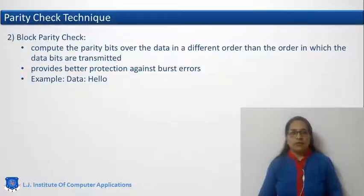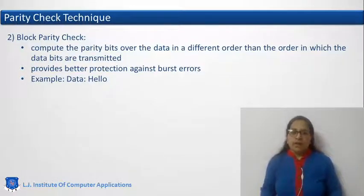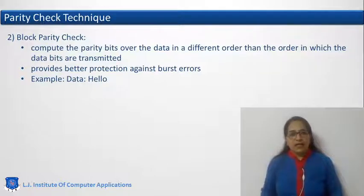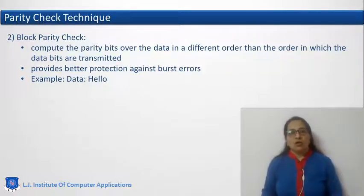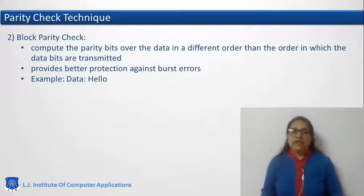To overcome this problem, we can use the second method: block parity check. Here also parity bits are calculated, but both vertical and horizontal parities are considered and calculated to make it even parity.